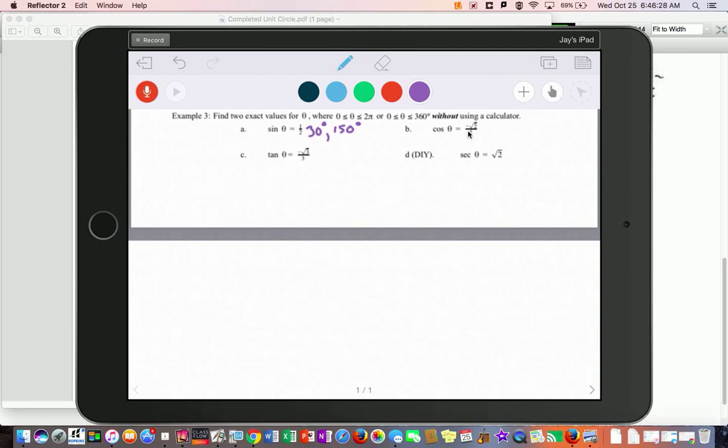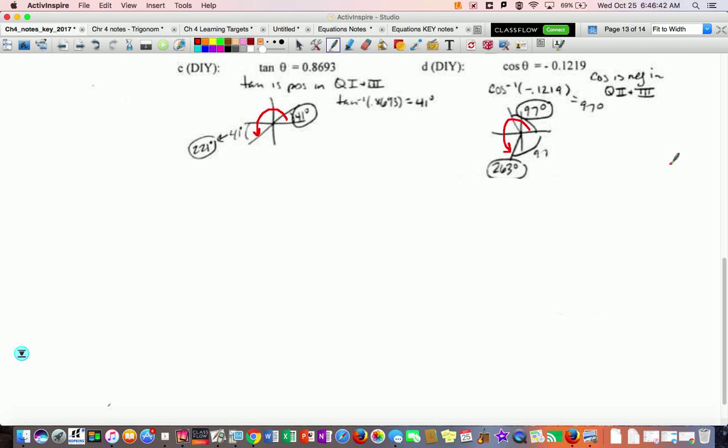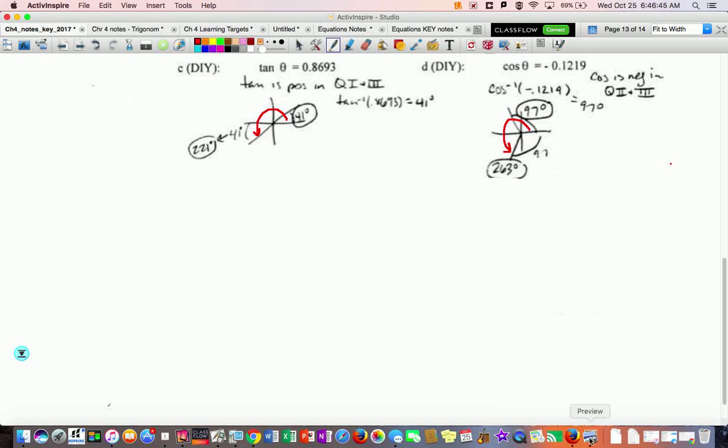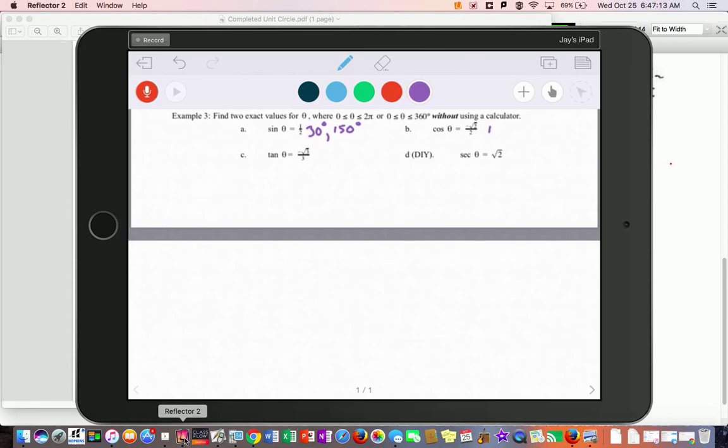So the second one we're doing is cosine is negative root 2 over 2. Now I know right away that root 2 over 2s, those are the 45s, so really I just need to figure out where is cosine negative. Looking at the unit circle, cosine is negative over here in quadrants 2 and 3. The first number is going to the left, that's your x or your cosine. So it's negative root 2 over 2 right here, which is 135 or 3 pi over 4, and it's also cosine is negative root 2 over 2 right here, which is 225 or 5 pi over 4. So I would write down, again, you can do degrees or radians. I'm just going to do degrees.